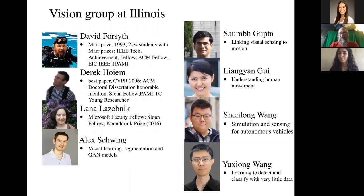Okay, so vision has historically been extremely strong at the University of Illinois. I am currently the sort of local old guy in vision. But my colleagues Derek Hoyme and Lana Lisebnik in computer science are both very eminent. I have a relatively new colleague, Alex Schwingen, in ECE, who works on visual learning and segmentation and GAN models. And another new colleague in ECE, Saurabh Gupta, who links visual representations with motion. And then this year, three new colleagues in computer science: Liangyan Gu, who understands human motion from pictures; Shenlong Wang, who's interested in simulation and vision for autonomous driving; and Yuzhong Wang, who's learning to detect and classify with very little data. So it's a large, highly visible and very broad group of researchers here. And as you would expect, there's a great deal of influence.